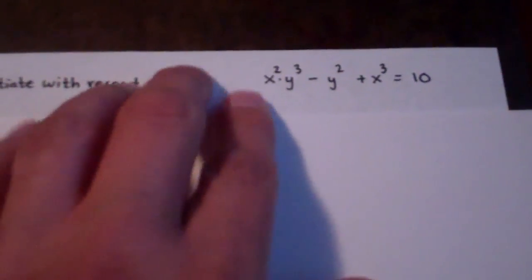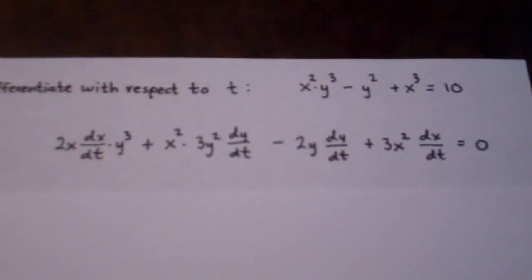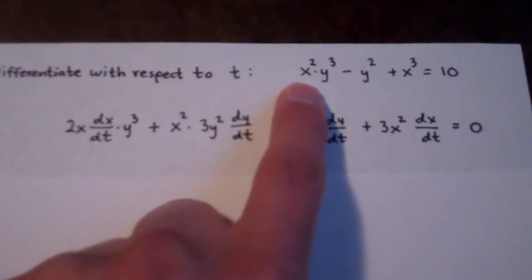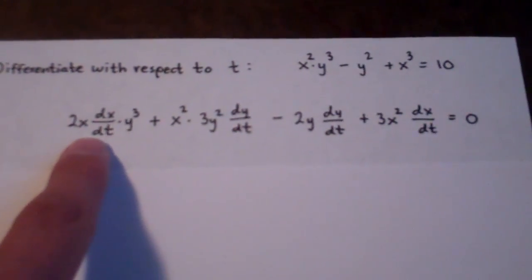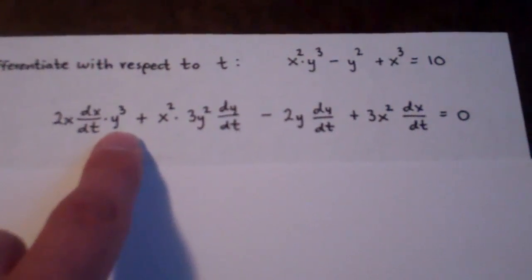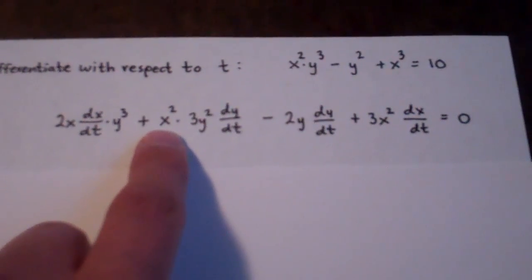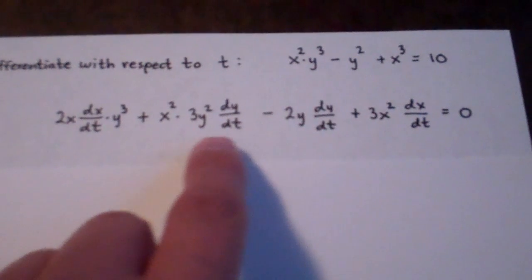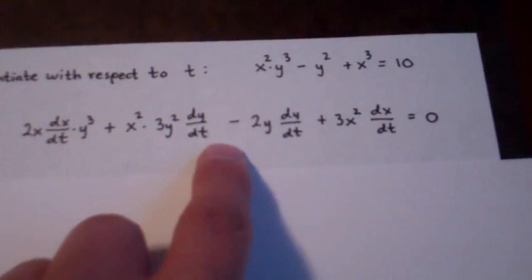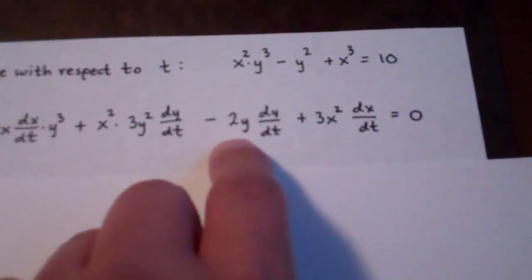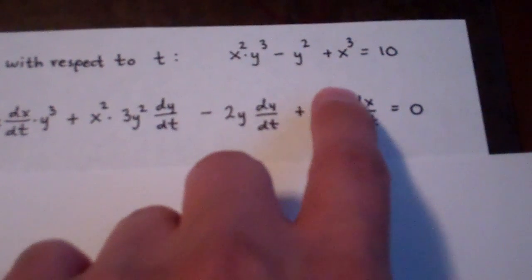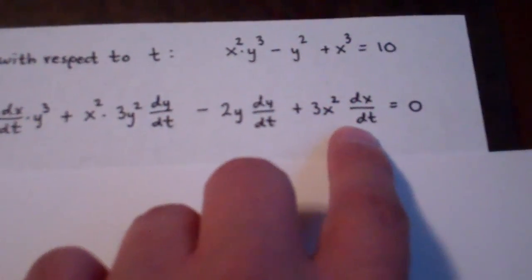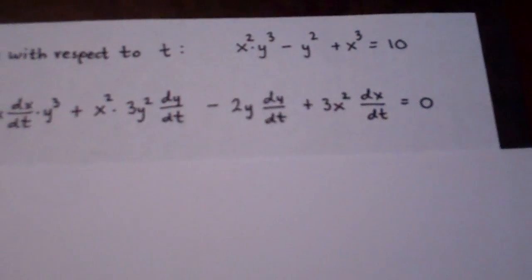So here's what the derivative looks like. We have to use the product rule on the first term: the derivative of x² gives 2x · dx/dt, multiplied by y³, plus x² multiplied by the derivative of y³ which is 3y² · dy/dt. The derivative of the second term is −2y · dy/dt, and the derivative of the third term is 3x² · dx/dt. And of course the derivative of a constant is 0.